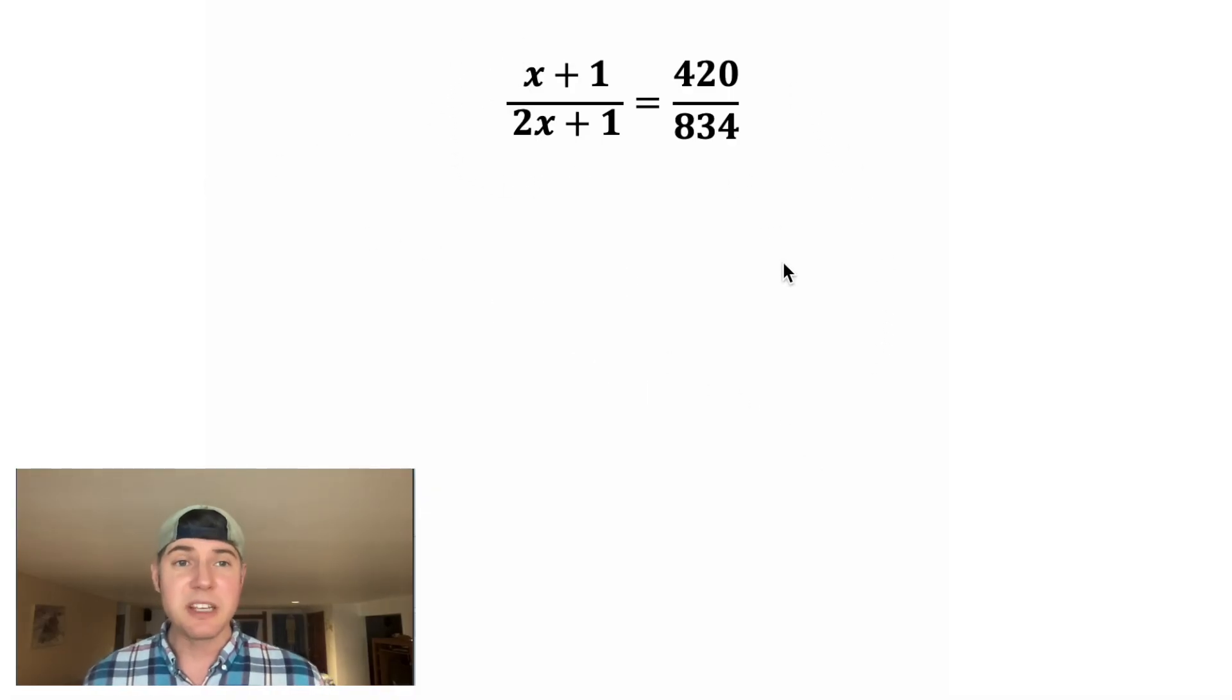I'm noticing on the side, we can simplify this fraction. Both the top and the bottom are divisible by 6. On top, 420 divided by 6 is 70. And on bottom, 834 divided by 6 is 139.